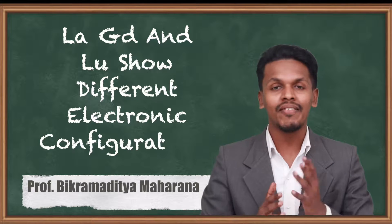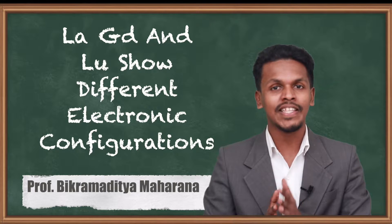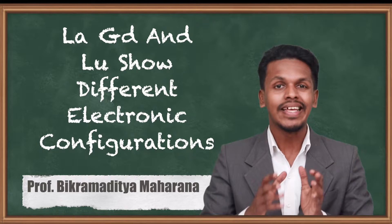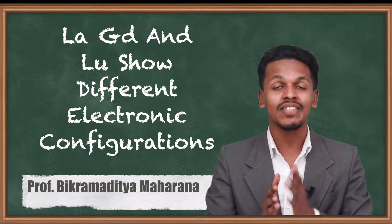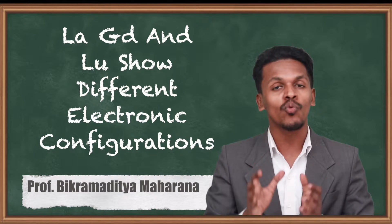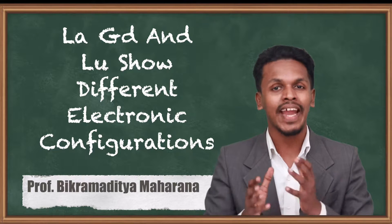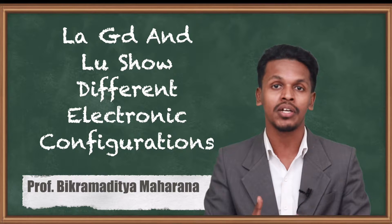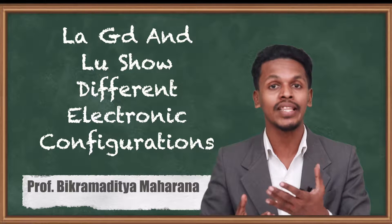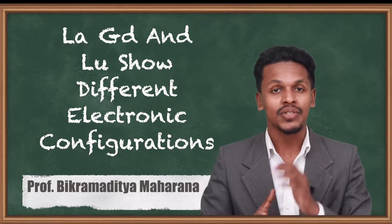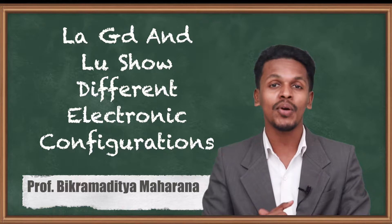Hello friends. In the previous topic we discussed about the electronic configuration of the lanthanoids as well as lanthanum. In this topic we are going to talk about why lanthanum, gadolinium and lutetium have different electronic configurations compared to that of the other lanthanoid elements. So let us understand the reason behind this.